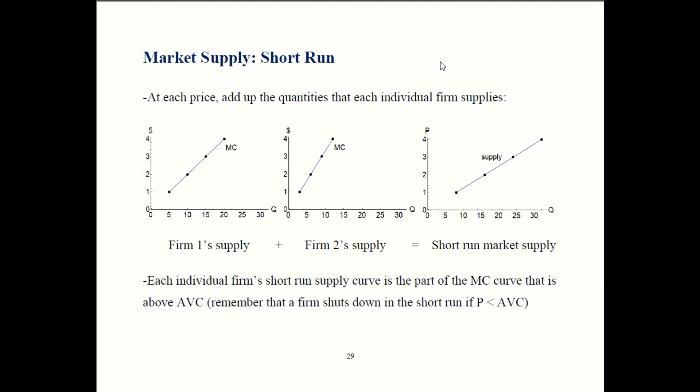So we learned earlier that the firm's supply curve, the individual firm's supply curve, is just the marginal cost curve up until a point where they would shut down. So you get that just by adding together the individual firm's supply curves.